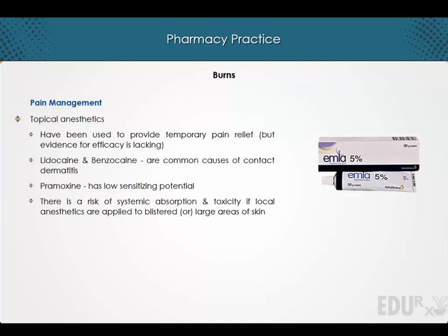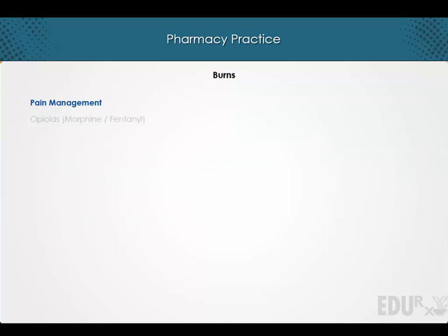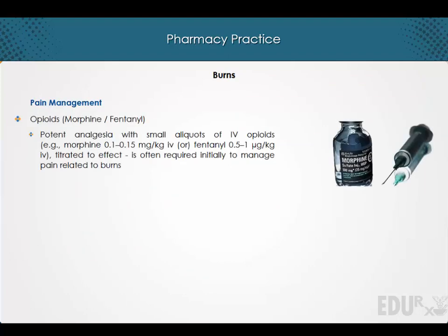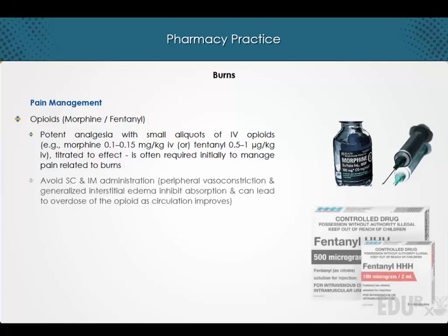Potent analgesia with small aliquots of intravenous opioids such as morphine or fentanyl is often required initially to manage pain related to burns. However, subcutaneous and intramuscular administration should be avoided, because peripheral vasoconstriction and generalized interstitial edema will inhibit absorption, and this can lead to overdose of the opioid as circulation improves.